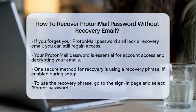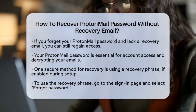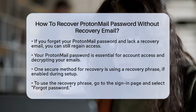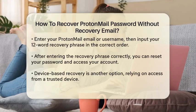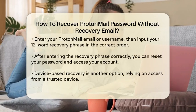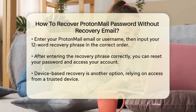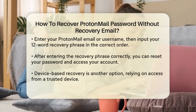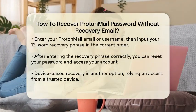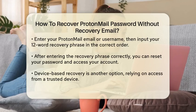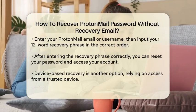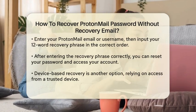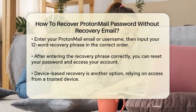Using a recovery phrase. One of the most secure and recommended methods is using a recovery phrase. If you've enabled this feature when you set up your account, you can reset your password and recover your encrypted data using this phrase. Go to the ProtonMail sign-in page and select the Forgot Password link. Enter your ProtonMail email address or username and click Next. You will be prompted to enter your 12-word recovery phrase — make sure to enter the words in the exact order they were given to you. Once entered correctly, you can reset your password and regain access to your account and encrypted data.